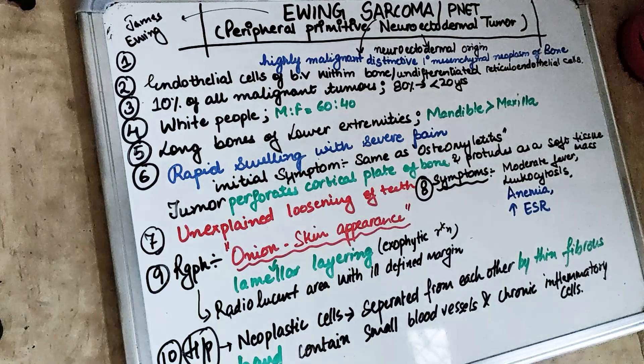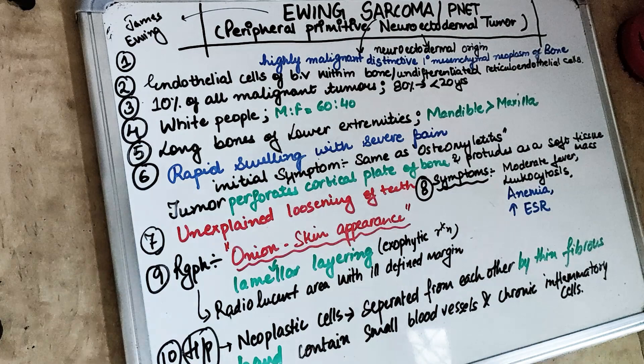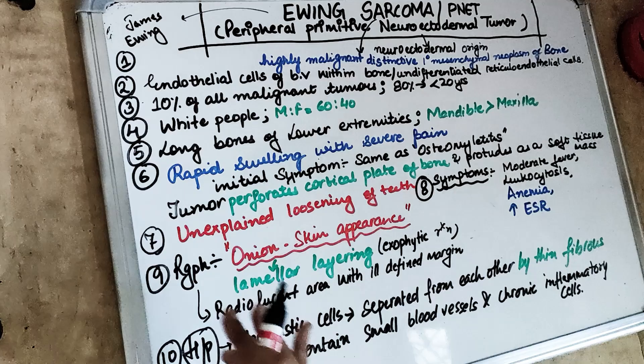Ewing Sarcoma, as the name suggests, is a sarcoma — meaning it is a malignant neoplasm. It is a highly malignant distinctive primary mesenchymal neoplasm of the bone. Regarding the primary malignant neoplasms of the bone: the first most common is osteosarcoma, the second is chondrosarcoma, and the third is Ewing Sarcoma.